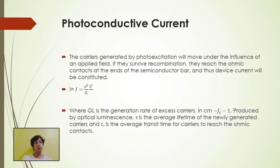In CME, Gl is equal to 1 produced by optical luminance of t is the average lifetime of the newly generated carriers, and t is the average transit time for carriers to reach the ohmic contacts.